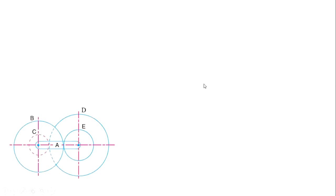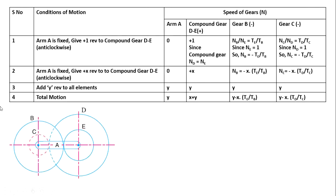Now to solve the problem, we have to make the tabulation of conditions of motion and speeds of the gears. First, assume arm A is fixed and give 1 revolution to compound gear DE anticlockwise. So arm A is 0, compound gear DE is plus 1. We know that in a compound gear, both gears run at the same speed, so ND = NE. Gear B is meshing with gear E, so we determine the gear ratio: NB by NE = TE by TB.